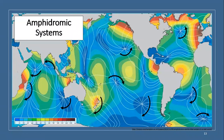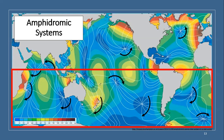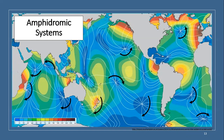Amphidromic systems. The rotation of the Earth creates gravitational forces called the Coriolis effect. These rotational forces deflect ocean tides into circular patterns called amphidromic systems. In the ocean's basins, tides in the northern hemisphere circulate northwards, or counterclockwise. Tides in the southern hemisphere circulate southwards, or clockwise. Next, we will discuss how amphidromic systems are created.